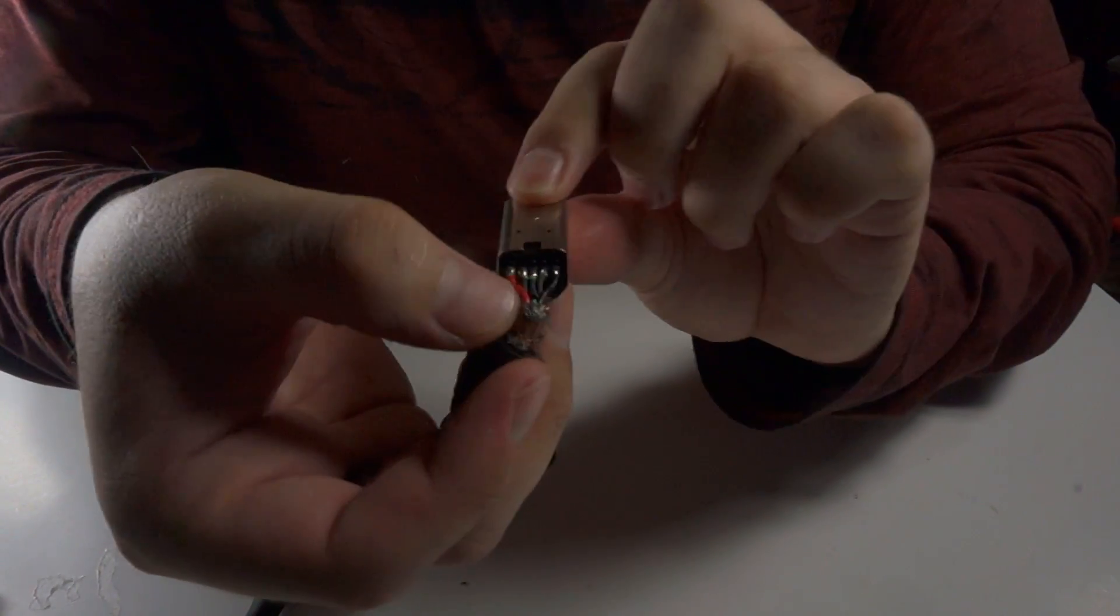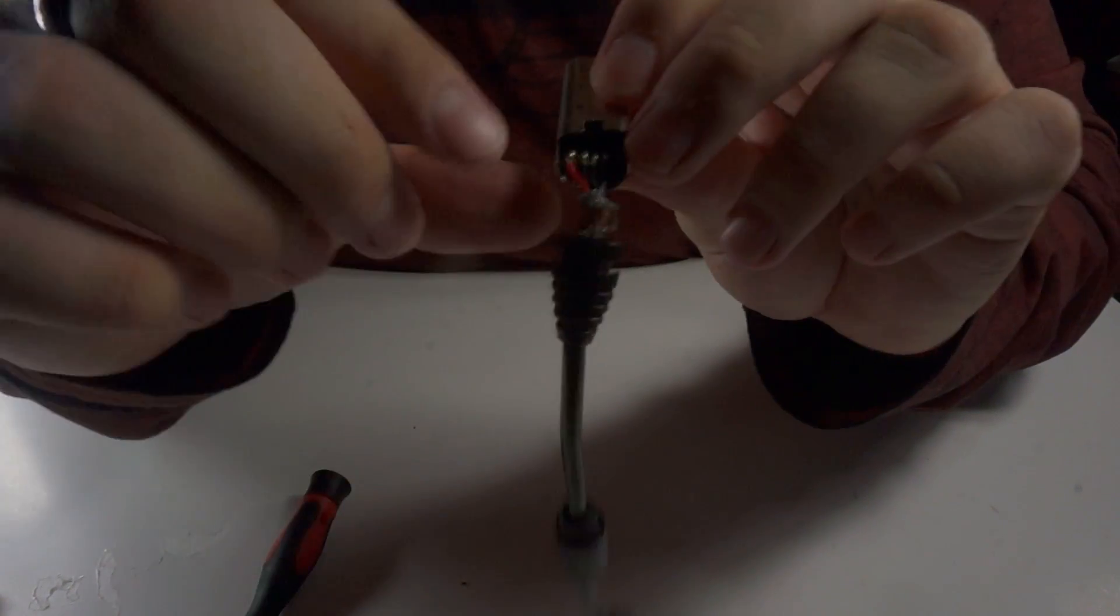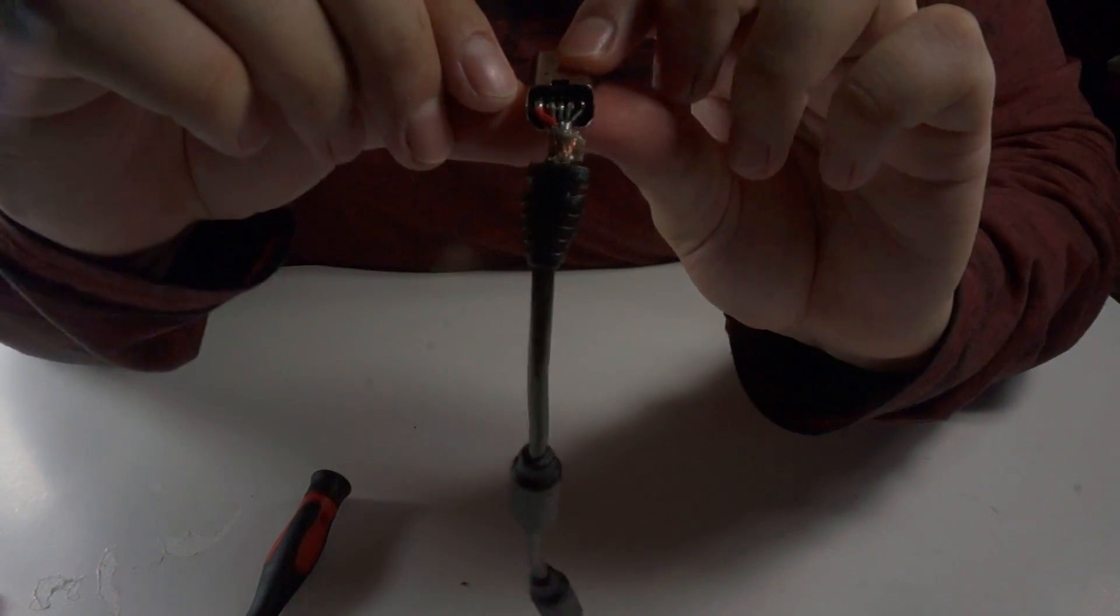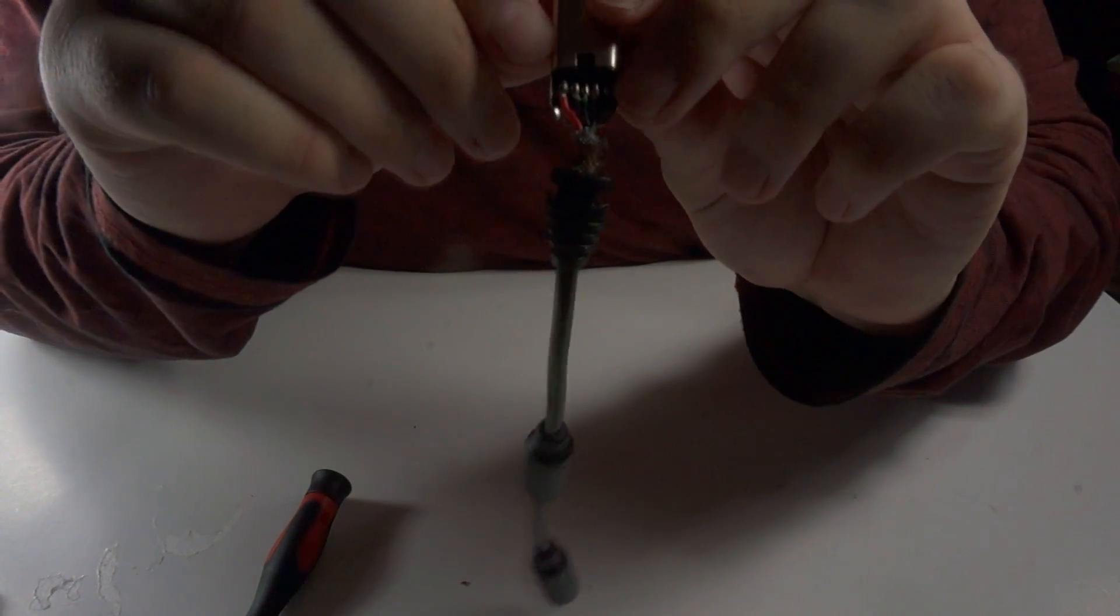As you can see, the wires, the red and the black on the other side, the red is going to be our positive and the black is going to be our ground.